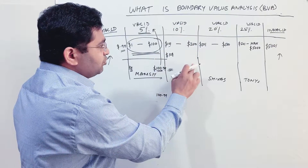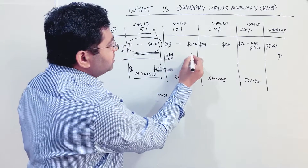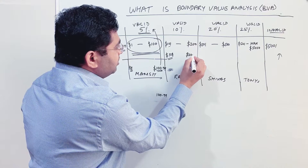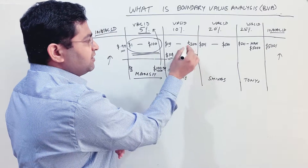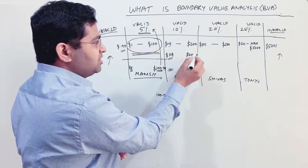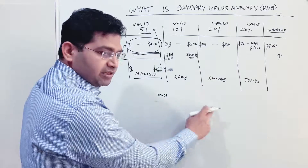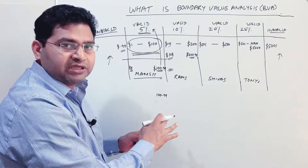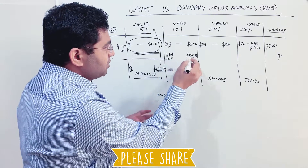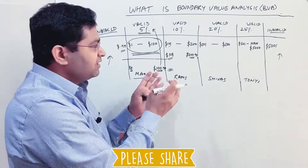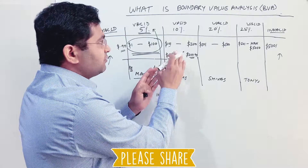So for the ten percent discount partition, the lower boundary value is one hundred and one dollars, and the higher boundary value is two hundred point nine nine, since we have assumed that point nine nine is not rounded up to one dollar. We get the lower boundary and higher boundary, the same way we defined length and breadth boundaries for the plot.